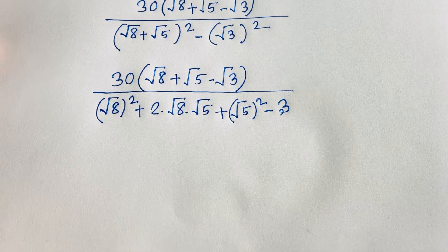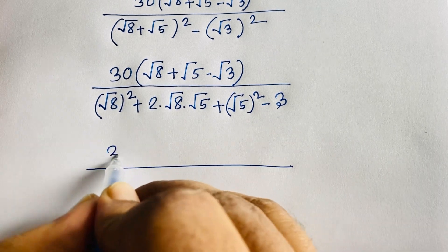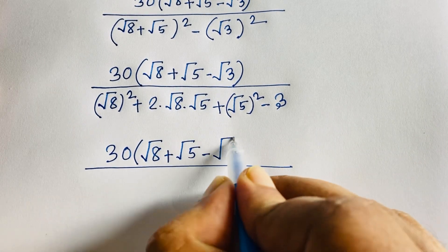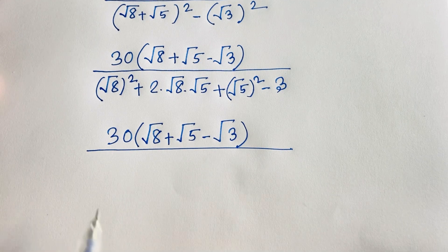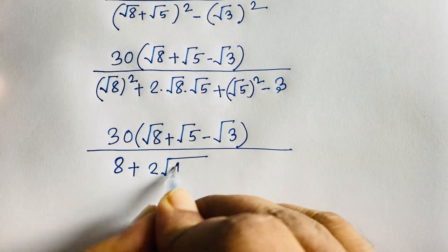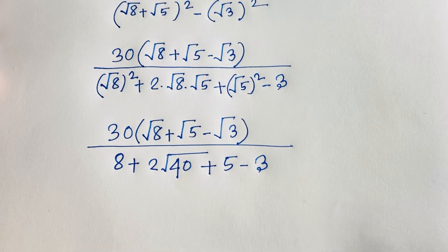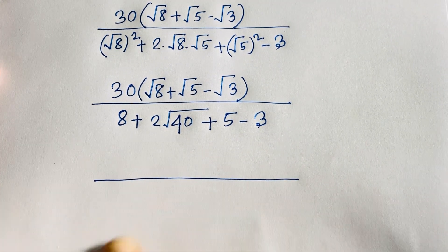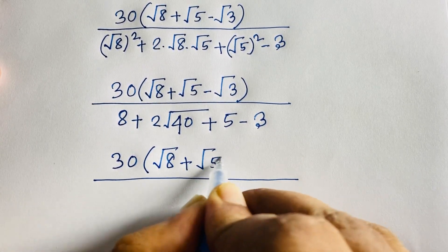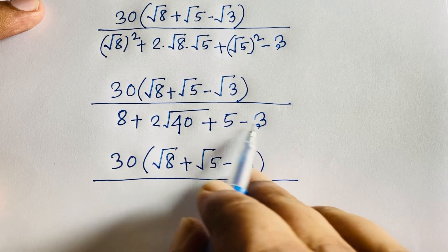The numerator is 30 times (√8 + √5 − √3). In the denominator, the square roots cancel: we get 8 plus 2 times √40 plus 5, minus 3. That gives us 8 plus 5 minus 3, which is 10, plus 2√40.